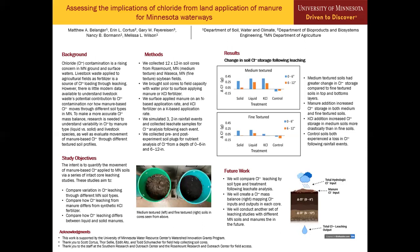In order to complete the study, we collected 12 inch in depth by 12 inch in diameter soil cores from Rosemount, Minnesota, and Waseka, Minnesota soybean fields. We then brought the soil cores to field capacity in the lab with water prior to surface applying any manure treatment or the KCL fertilizer. Once we did that, we surface applied manure on a nitrogen-based application rate while we applied KCL fertilizer on a K-based application rate. Afterwards, we simulated three two-inch rainfall events and collected leachate samples for chloride analysis following each event.